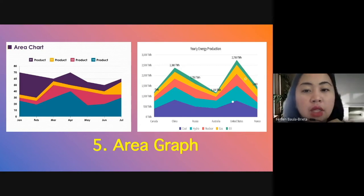So in the other one here, we have yearly energy production. We have different countries, Canada, China, Russia, Australia, United States, and France. And then we have their watts per hour. So you can see they have high consumption with oil.